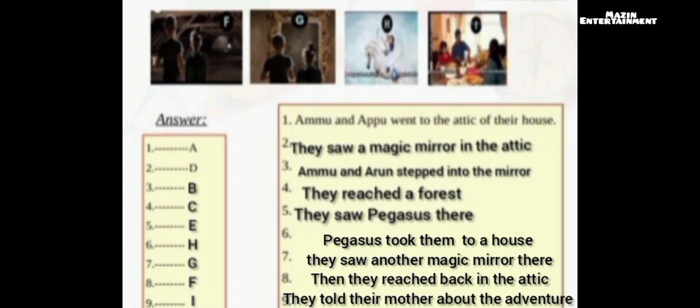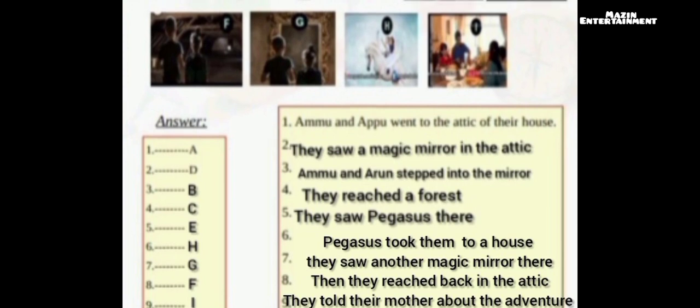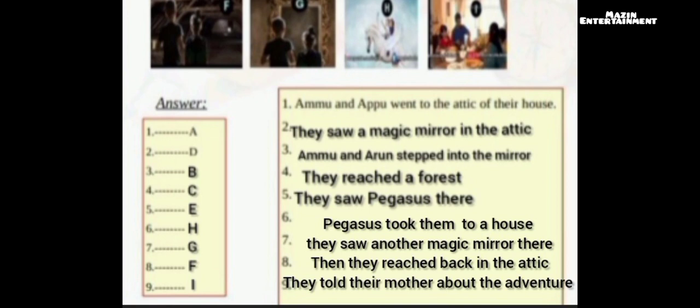Ammu and Appu went to the attic of their house. Second picture: they saw a magic mirror in the attic. Ammu and Appu stepped into the mirror. They reached the forest. Pegasus took them to a house — they saw another magic mirror there. Then they reached back into the attic. They told their mother about the adventure.